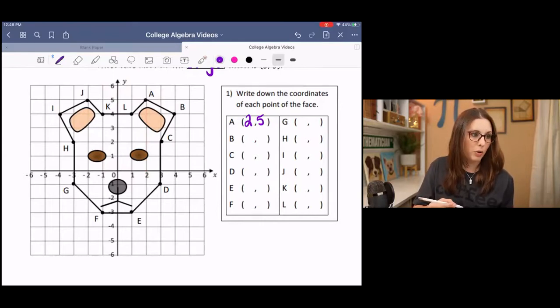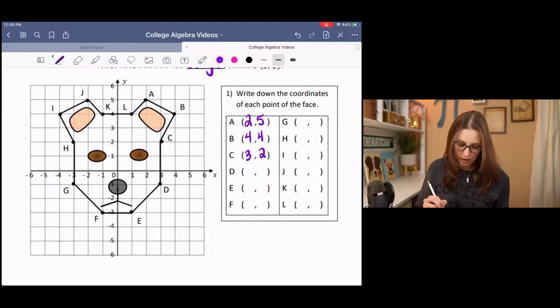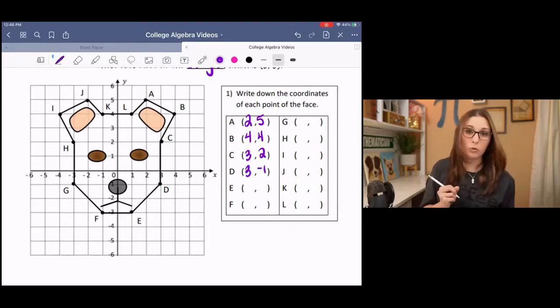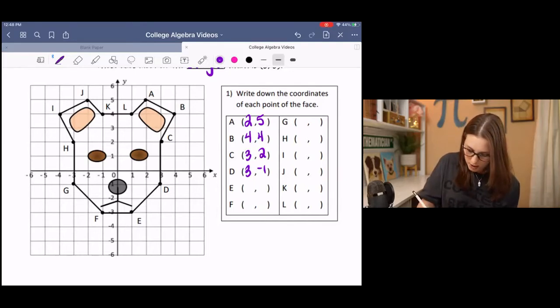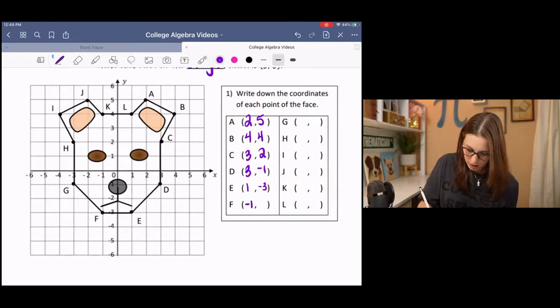So B, we would go over 4, up 4. C, we would go over 3, up 2. D, over 3, down 1. So that's going to be a negative 1. E, we would go over 1, down 3. F, left 1, down 3. So those are both negative.